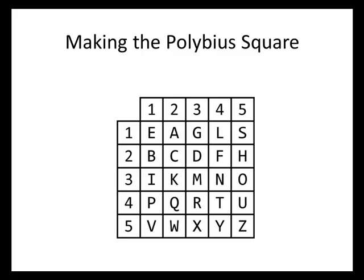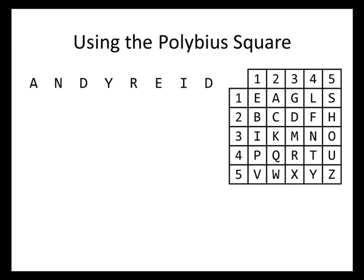So now how do we use this Polybius square to encode our message? We're going to write the letters of our message, leaving some space to work. We've got 8 letters: Andy Reid. If our message had an odd number of letters, we would have had to add an extra letter at the end — usually X or Q, a letter that isn't very common in English — so that when the message is decoded, we're not confused into thinking that extra letter is part of the message. But in this case we've got 8 letters, which is an even number, so our method will work with the message just the way it is.